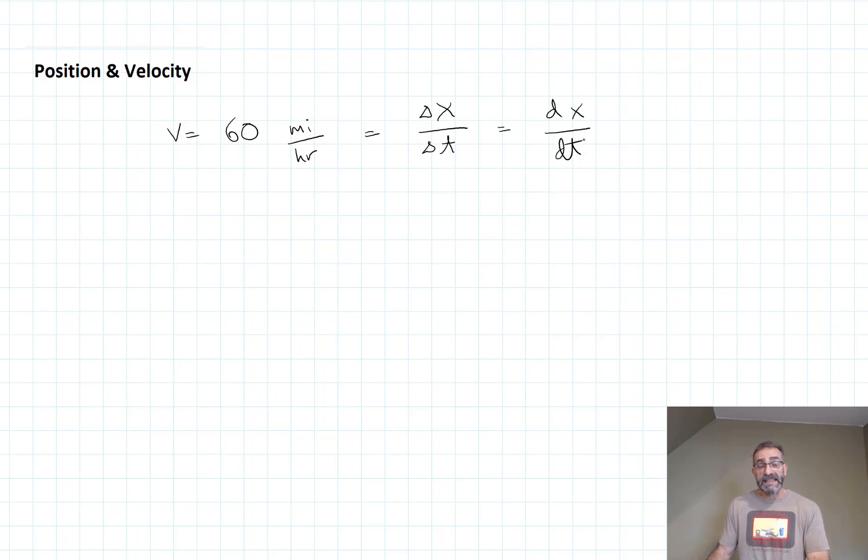So if I'm traveling at 60 miles per hour, how far do I go in three hours? Well, we can just rearrange some things here. We can say our distance, our change in position, our displacement, is equal to our velocity times our time interval. So if we're going 60 miles per hour and we travel for three hours, cancel our units, 180 miles.